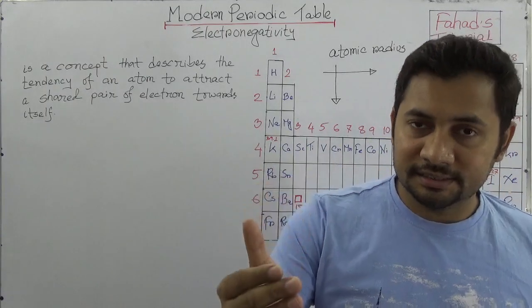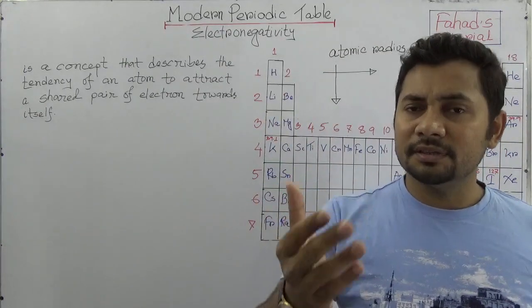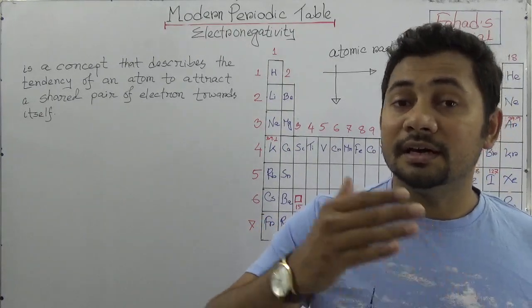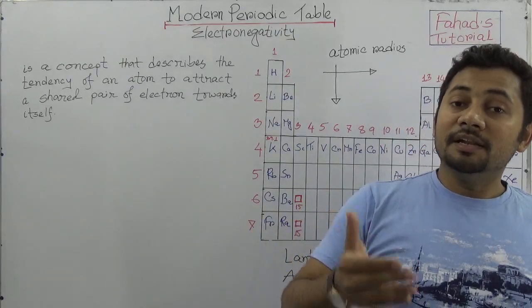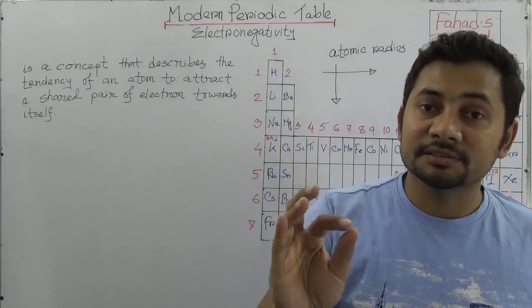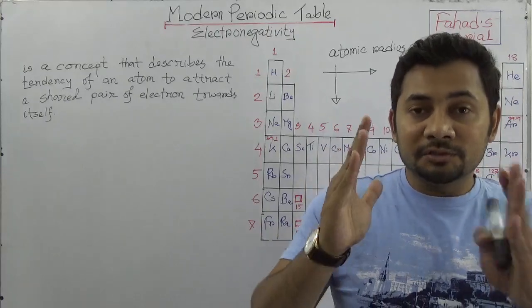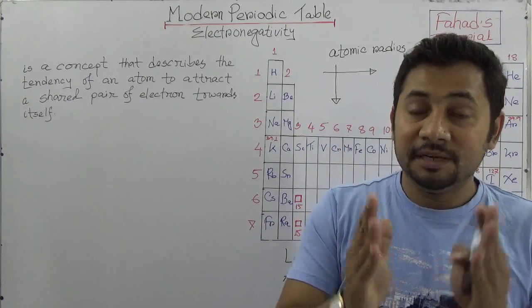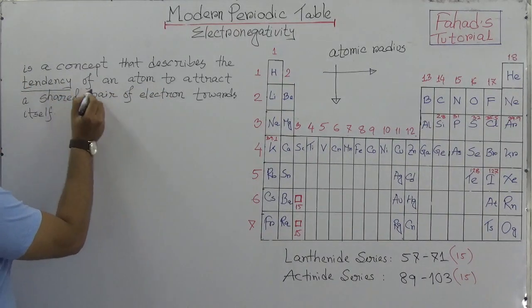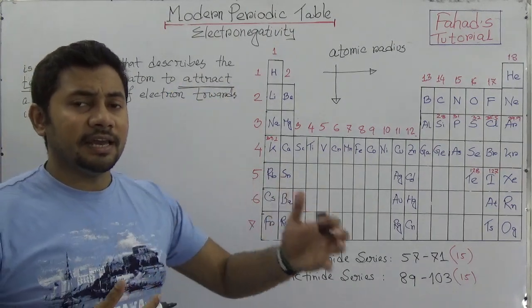Think about the covalent bond. In the chapter on chemical bonding, you have already studied ionic bonds and covalent bonds. In a covalent bond, two atoms share electrons, and those shared paired electrons should be positioned between the two atoms. But then the tendency of an atom to attract those electrons comes into play, which is pretty similar to electron affinity.